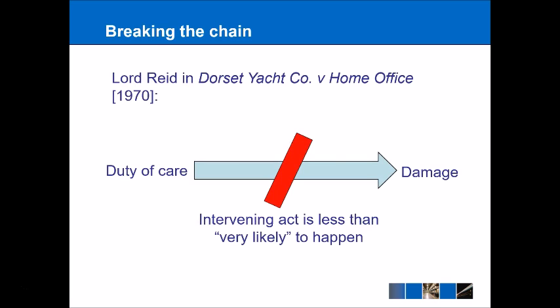What test can we use to define what an intervening act actually is? Lord Reid in Dorset Yacht Company said that an intervening act is anything that is less than very likely to happen. But the problem is that this makes it very difficult to break the chain of causation. Lord Denning criticised this in Lamb, giving the example of a prisoner escaping jail — it's very likely they would steal a car to get away, steal clothes, and steal another car to evade police. All of these are very likely, but this extends the chain of causation very far.